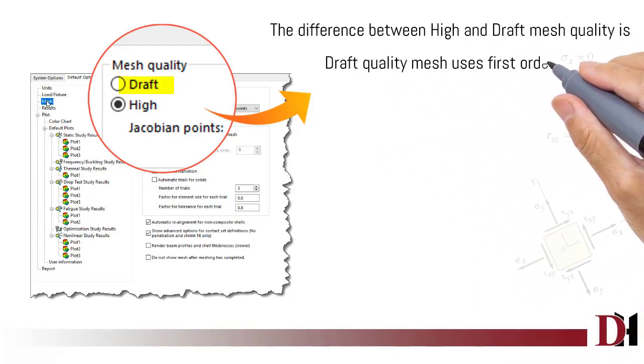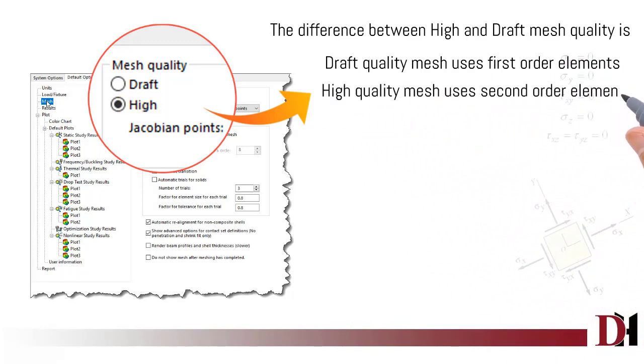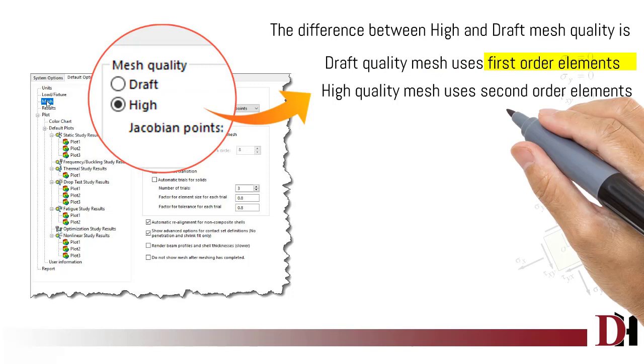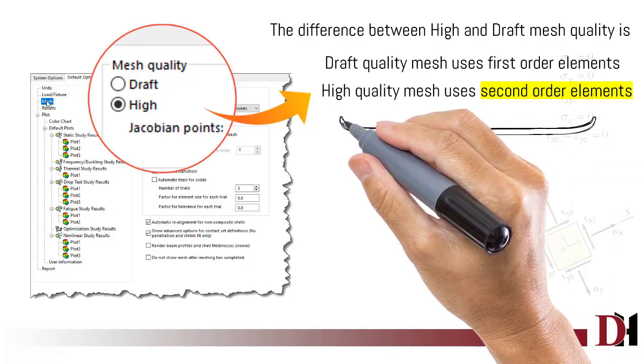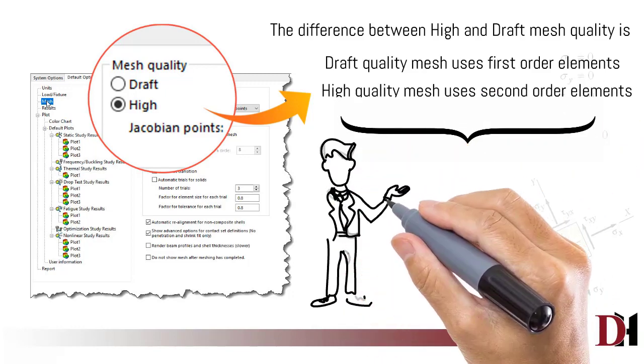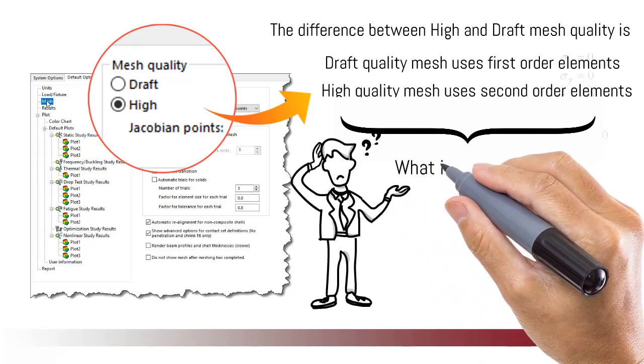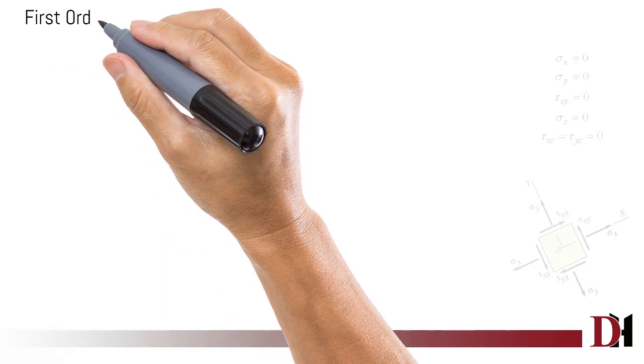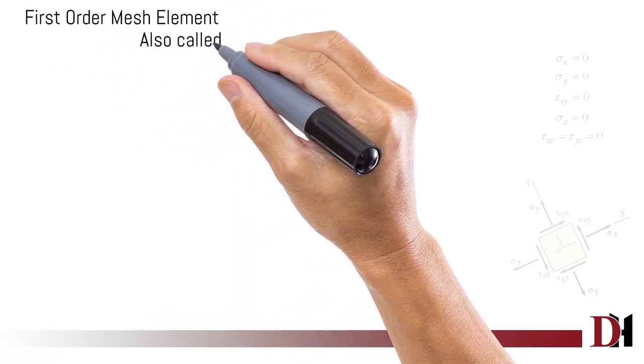First is draft type, second is high quality type. Now, what is the difference between draft quality and high quality? Draft quality uses first order elements, while high quality uses second order elements.